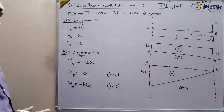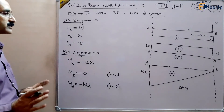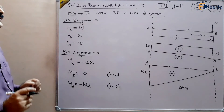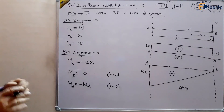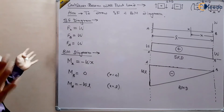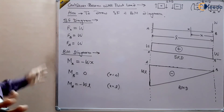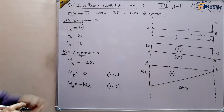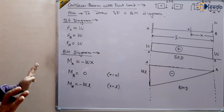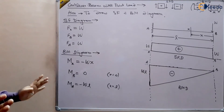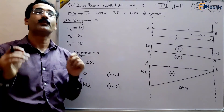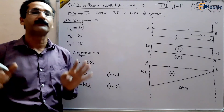By using the bending moment diagram and shear force diagram, we can find out the shear forces and bending moment at any cross section of the beam. This is the simplest case of a cantilever beam with a point load at the free end.